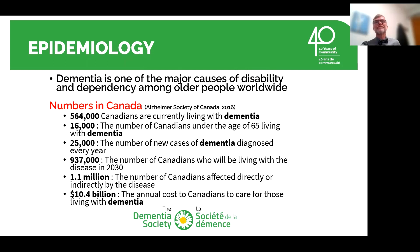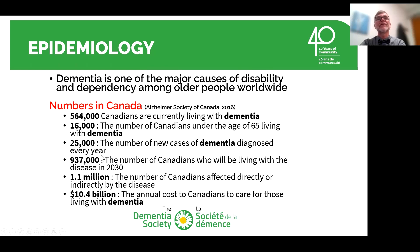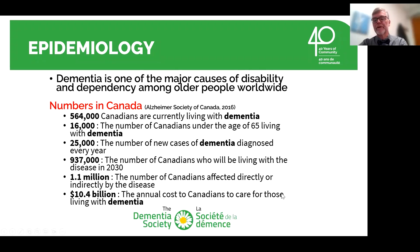Some numbers: in 2016, half a million Canadians were living with dementia, of whom 16,000 were under age 65. Every year, 25,000 new cases are diagnosed. By 2030, almost a million cases were predicted in Canada. 1.1 million Canadians are affected directly or indirectly by the disease, since there's usually at least one caregiver directly affected. In 2016, we were already spending $10 billion to care for Canadians living with dementia.